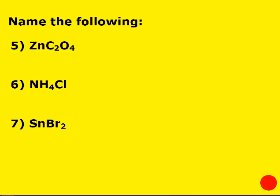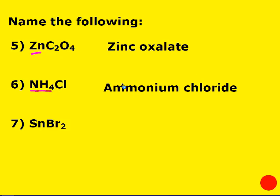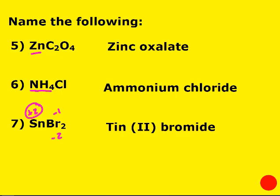Pause the video and do these last three on your own, then restart when done. Zinc is a metal and we know its charge, so we just name the two pieces: zinc oxalate. The next one is tricky — the first element is nitrogen, a nonmetal, but you can't have three elements and it be molecular. This is ammonium, so we just name the two pieces: ammonium chloride. The last one is Sn — we don't know its charge and it's a metal — so: −1 times 2 is −2, meaning Sn is +2, giving tin(II) bromide.